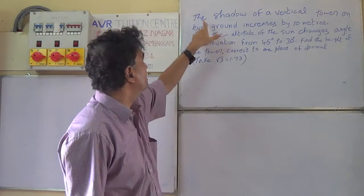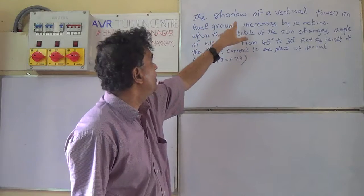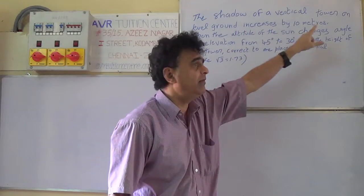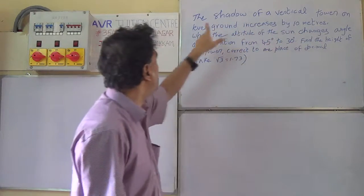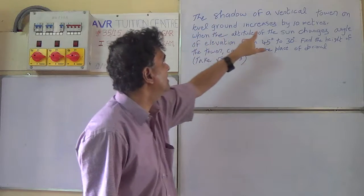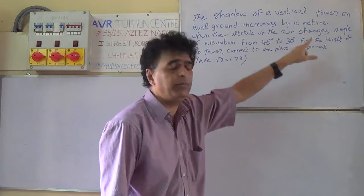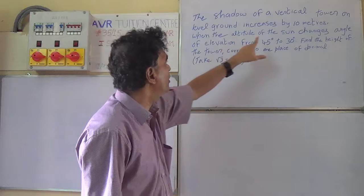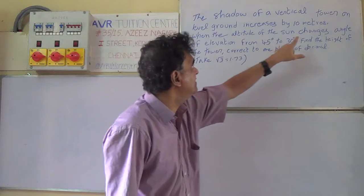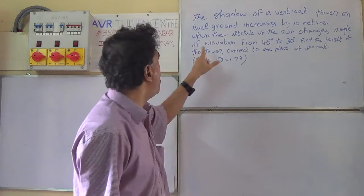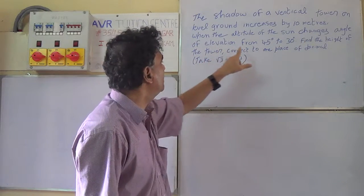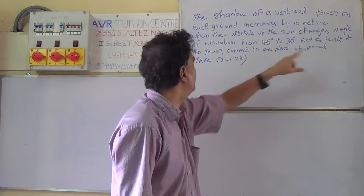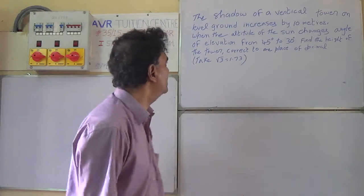The shadow of a vertical tower on level ground increases by 10 meters when the altitude of the sun changes from an angle of elevation of 45 degrees to 30 degrees. Find the height of the tower.